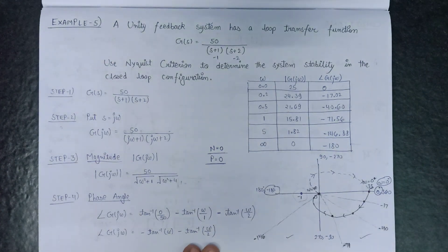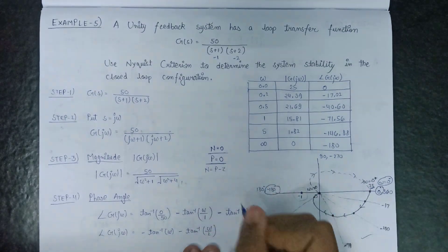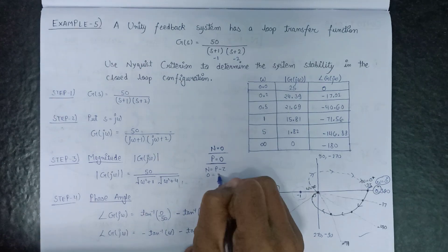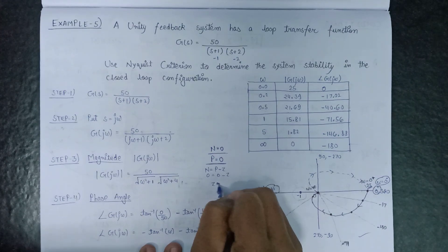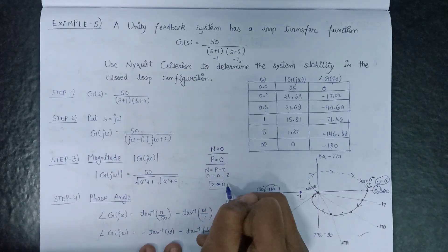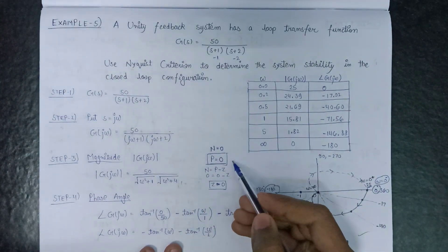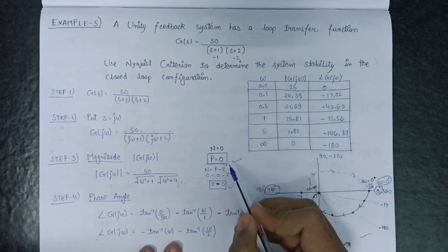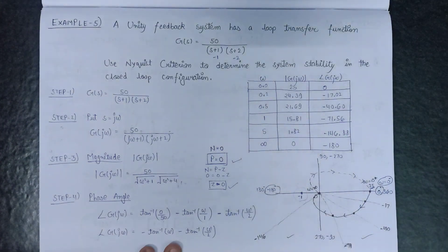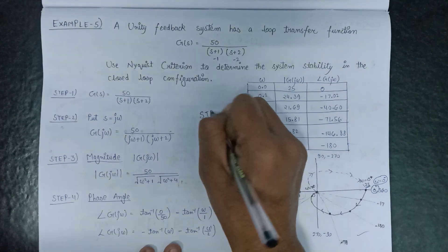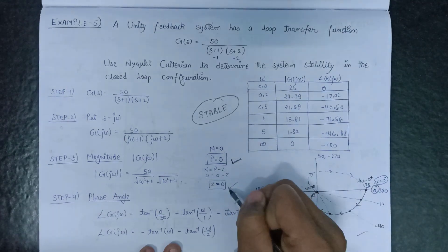Now let's calculate Z. Using the relation N equals P minus Z, with N=0 and P=0, we get Z=0. Since both P and Z are equal to 0, we can conclude that our system is stable. This system is stable because P=0 and Z=0.